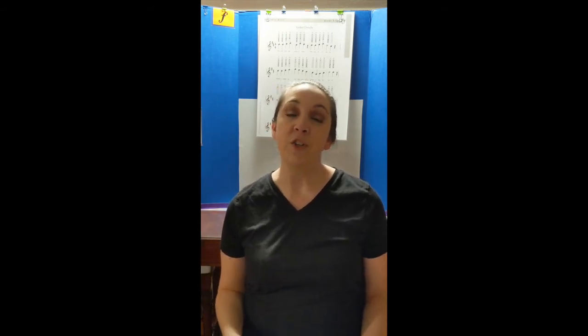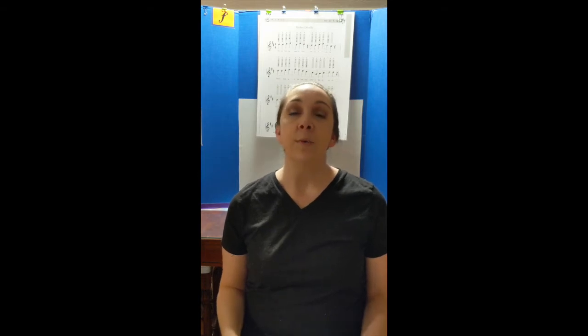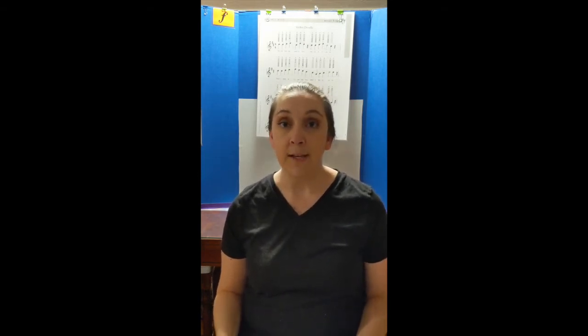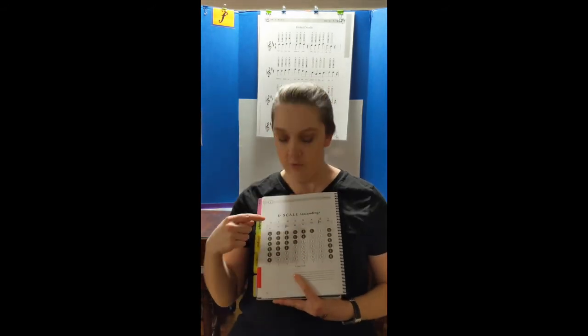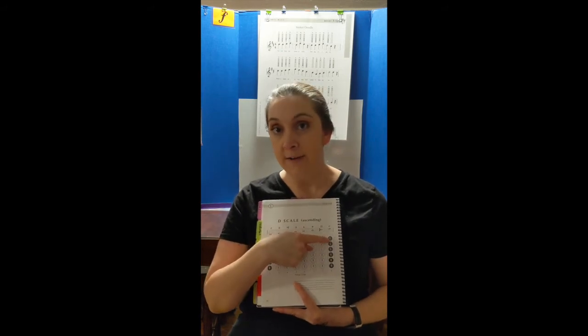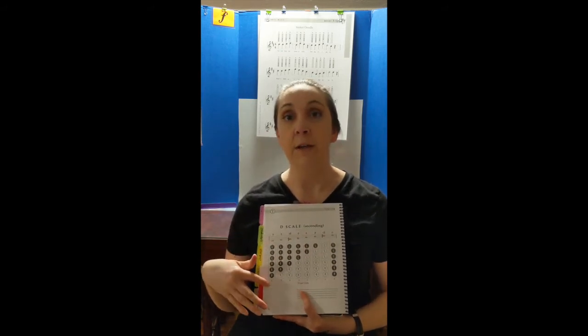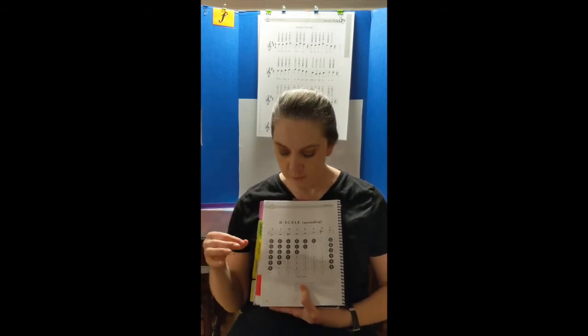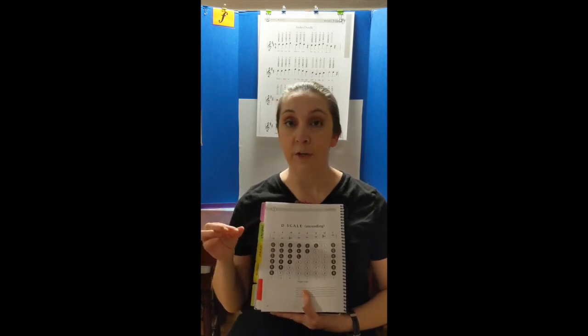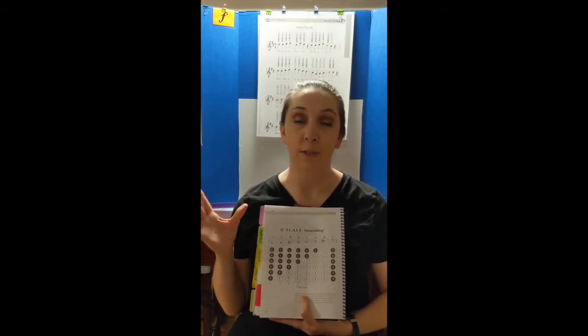Our tin whistles are in the key of D, so we'll be going over the D scale. It's in your foundations guide on page 100 — it shows you the D scale as it appears on the staff as well as the fingerings for your tin whistle. The dark circles mean your finger is covering the hole, and the light circles mean your finger is off the hole and the hole is open.